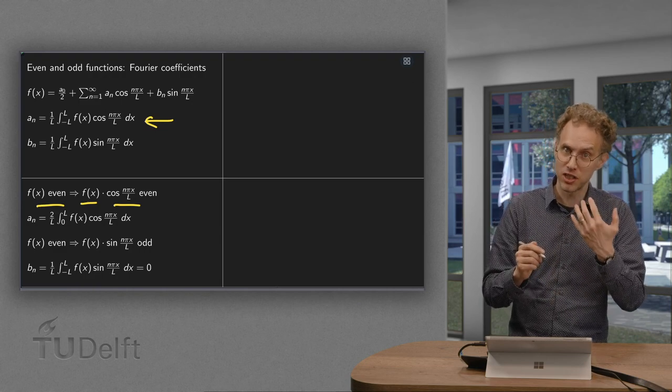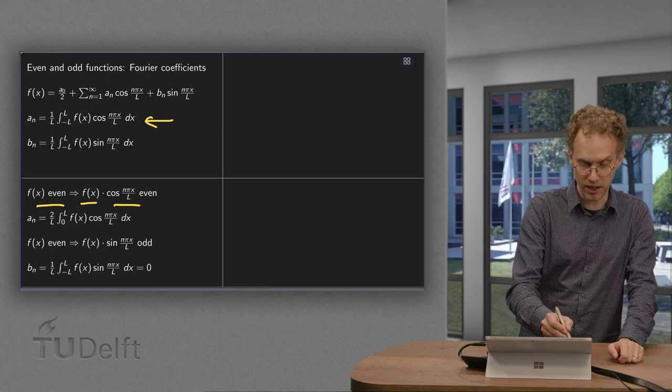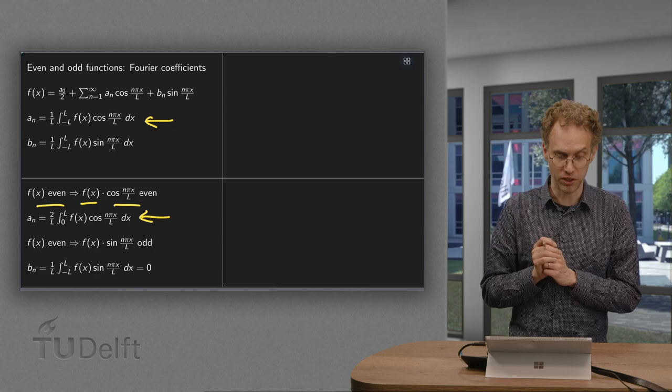So we get twice the integral from 0 to l. So the a_n can be integrated like that. Does not simplify too much.